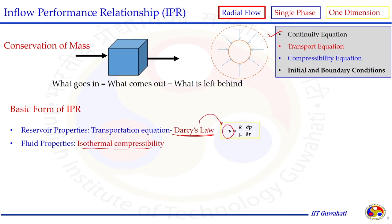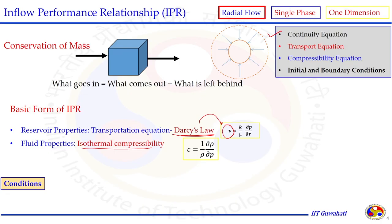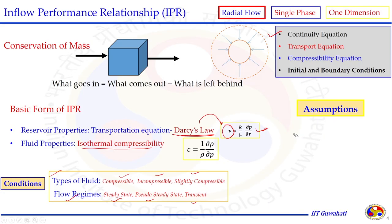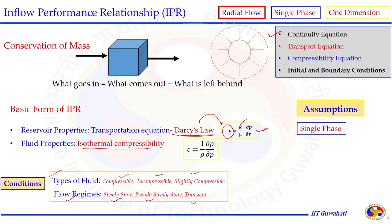We start with the transport equation from Darcy law and the fluid property from isothermal compressibility into conservation of mass. Darcy law in terms of velocity can be converted into the form of Q also, and the isothermal compressibility C can be in terms of density or volume. When we put all of them into the conservation of mass equation we get the generalized form of the IPR. That generalized form can be applied for compressible, incompressible, slightly compressible fluids, and for steady state, pseudo steady state, and transient flow.